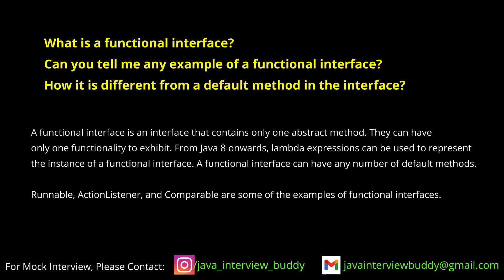What is a functional interface in Java? A functional interface contains only one abstract method. It is an interface — we can achieve functional programming with the help of functional interface annotations. It has only a single abstract method.